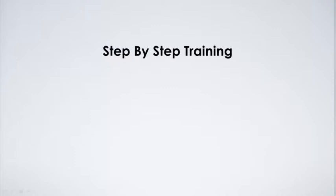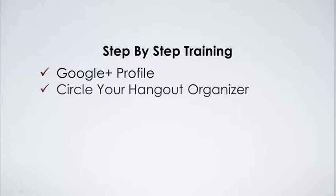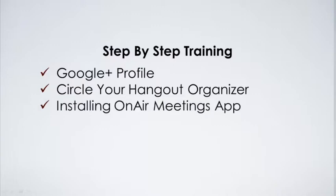So what we want to do is first show you, if you haven't already, how to create a Google Plus profile. You'll need a Google Plus profile in order to enter the Hangout. And then we want to show you how to circle your Hangout organizer so that you make sure you get the invitation when it's time to start, and then we'll teach you how to install an on-air meetings app that'll make you look like a Hangout rock star.